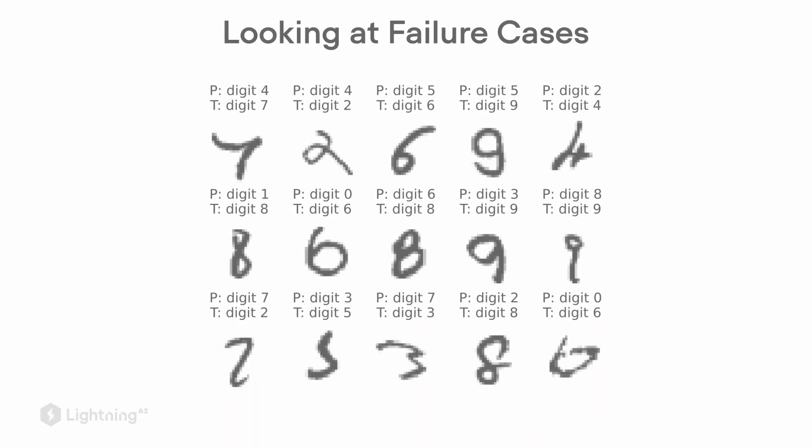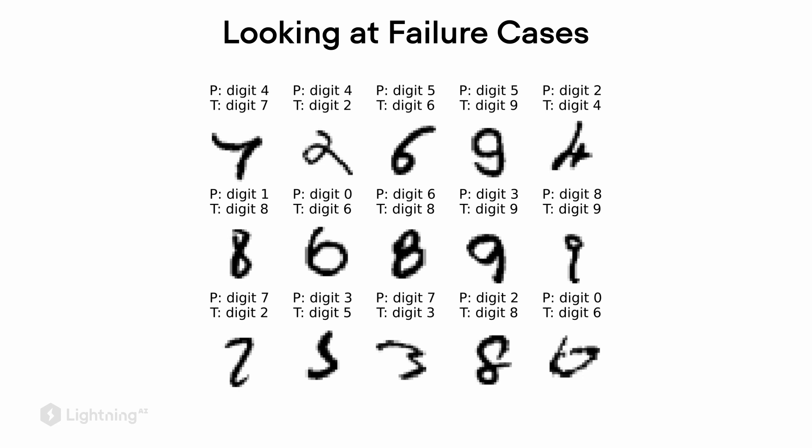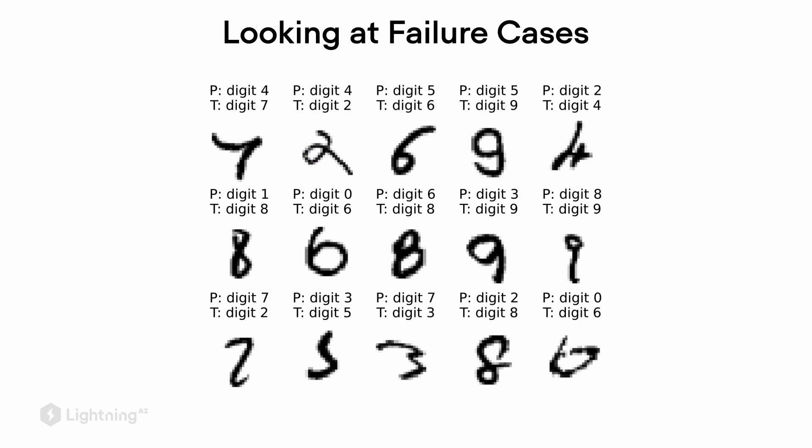One thing that I find always helpful, particularly when working with image data, is looking at failure cases — cases where the model makes wrong predictions. Here I have a plot of some test examples in the MNIST dataset where the model makes wrong predictions. The P stands for predicted and the T stands for true label. For example, in the upper left corner, the true label is a seven but the model predicts a four. As a human, I would even have a hard time seeing that this is a seven — it looks more like a four.